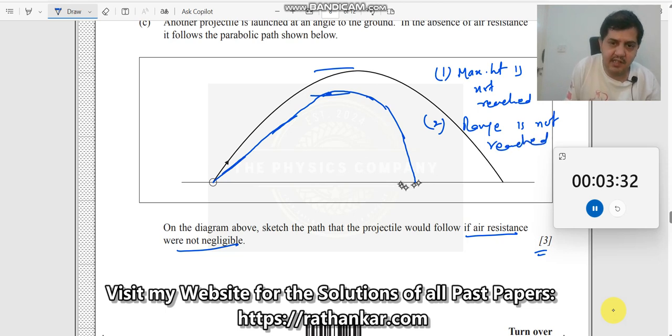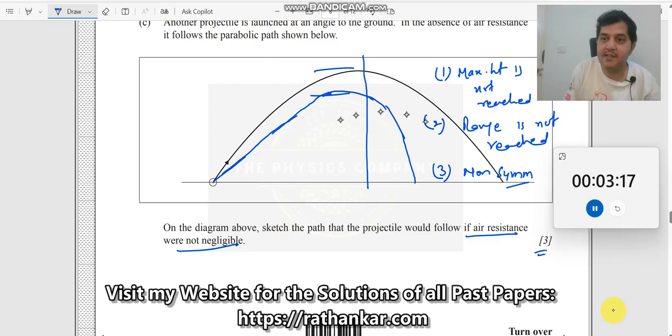Maximum range is not reached. It falls before the range. The third one is very important: non-symmetrical. See this part? If you look at this here, the upper part is equal to the down part because it's symmetrical. But when you consider with air resistance, it will not be symmetrical. It will show something like it is less skewed over here.